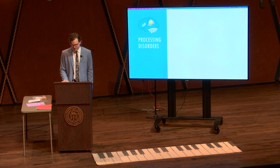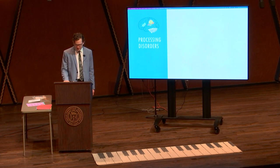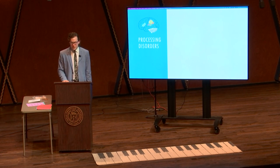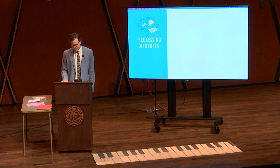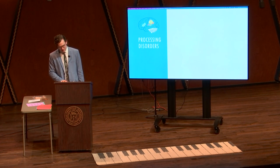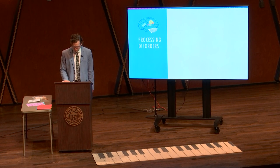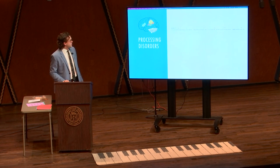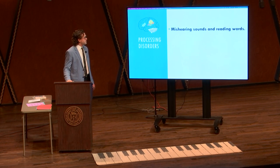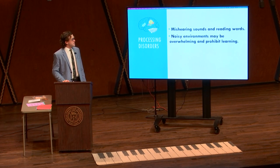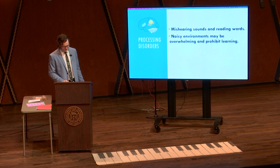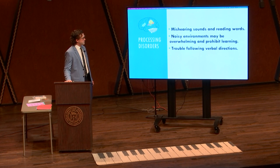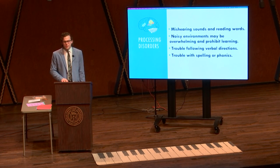Second on the list from the survey are processing disorders. There are different types of processing disorders, including auditory processing, visual, and sensory. It is a condition in which the brain has difficulty receiving and responding to information that comes through the senses. Some issues one may have with a processing disorder include mishearing sounds and reading words, noisy environments may be overwhelming and prohibit learning, trouble following verbal directions, and trouble with spelling or phonics.